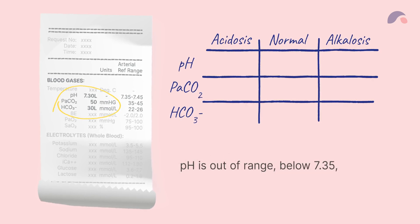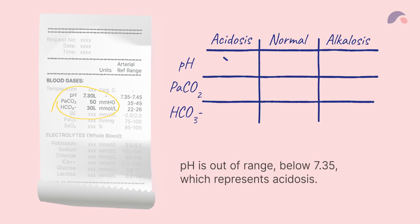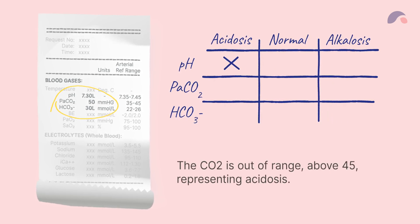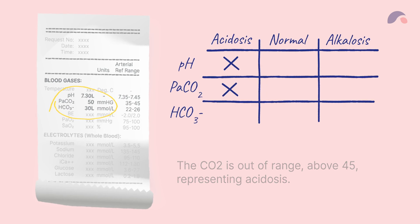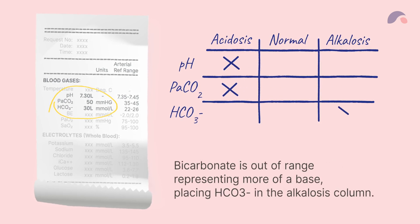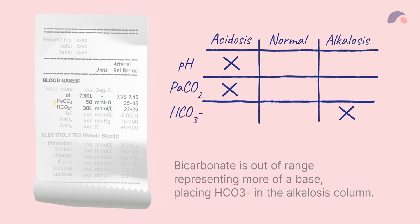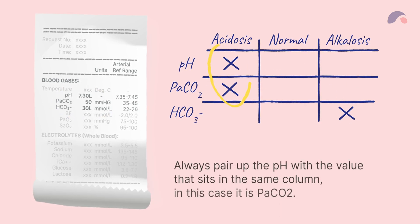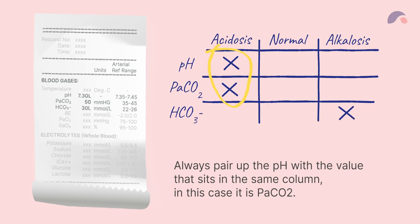The pH is out of range, below 7.35, which represents acidosis. The CO2 is out of range, above 45, representing acidosis. Bicarbonate is out of range, representing more of a base, placing HCO3 negative in the alkalosis column. Always pair up the pH with the value that sits in the same column — in this case, it's PaCO2.